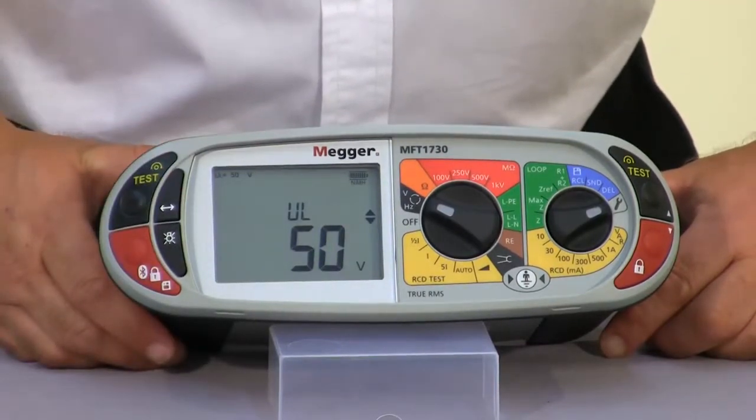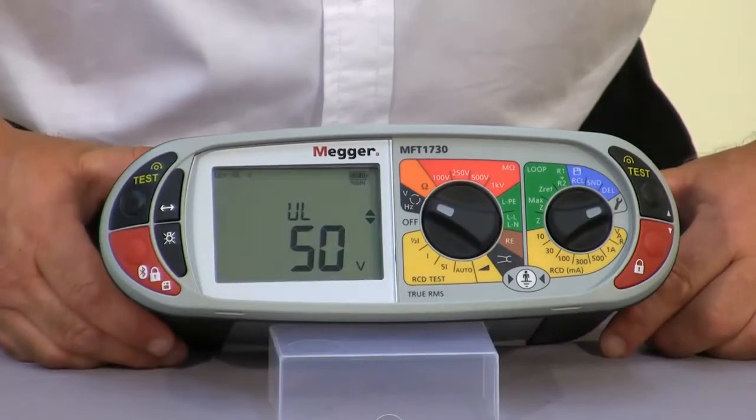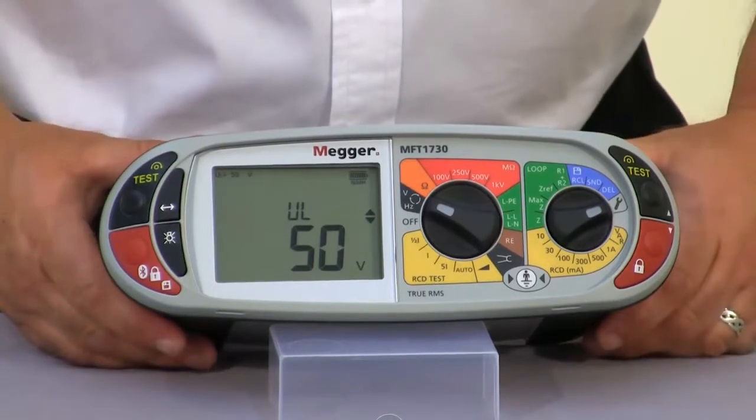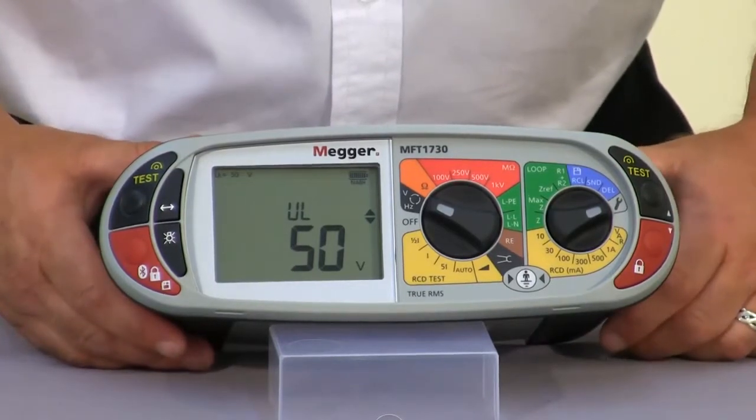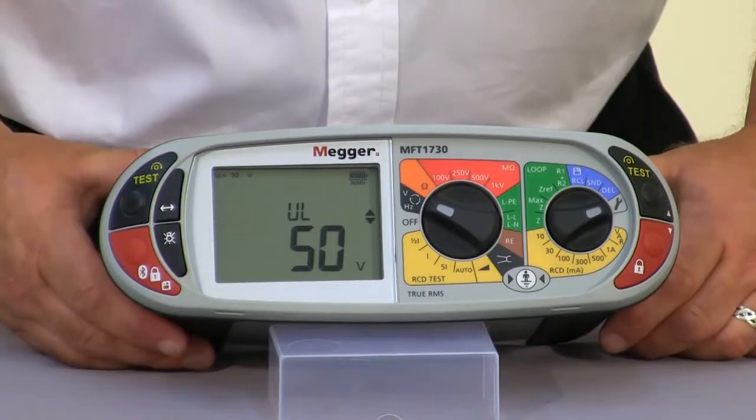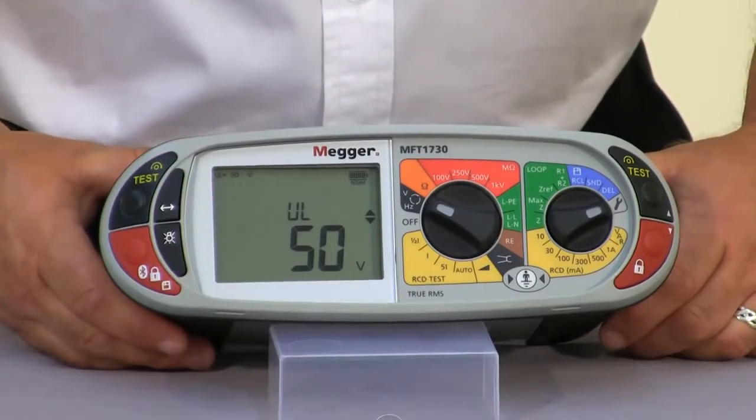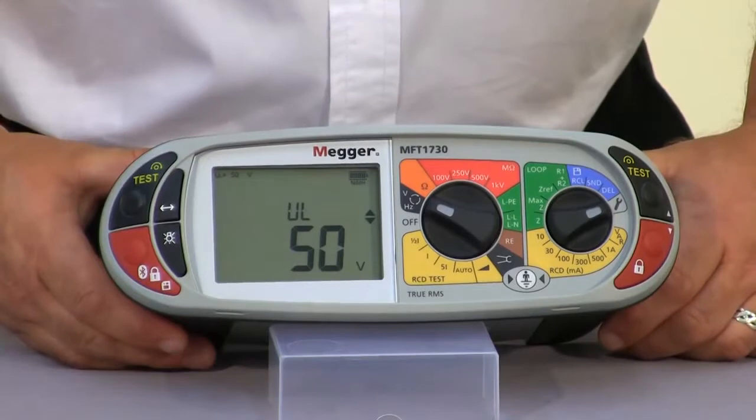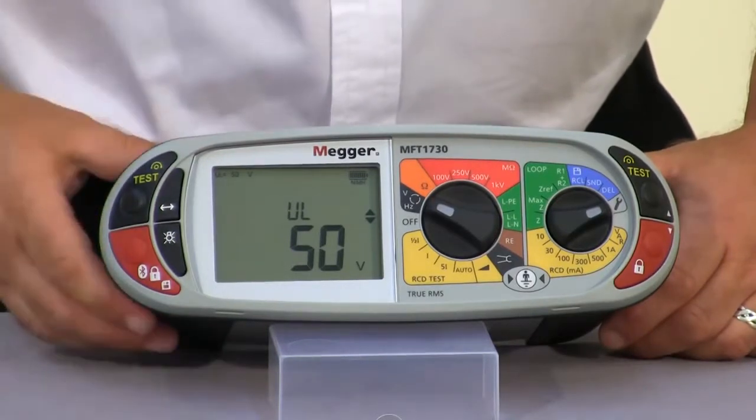UL is our touch voltage. During an RCD test, it'll actually monitor to make sure that we do not get a dangerous voltage measured between the neutral and the earth during an RCD test. It will actually inhibit the test should this voltage rise to greater than 50 volts.